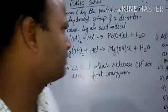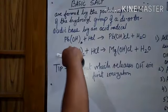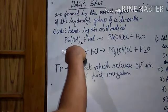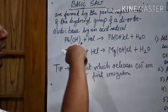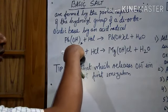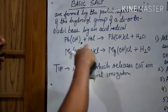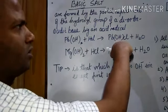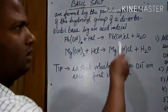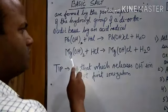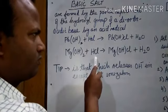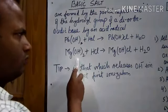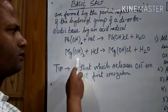Let us see with some examples. We have lead hydroxide — this is the base, and we have an acid. The acidity of this base is two, because we see two hydroxyl ions. So there is a partial replacement: one hydroxyl ion has been replaced. Similarly, Mg(OH)₂, magnesium hydroxide, reacts with an acid. This is a diacidic base, giving MgOHCl.